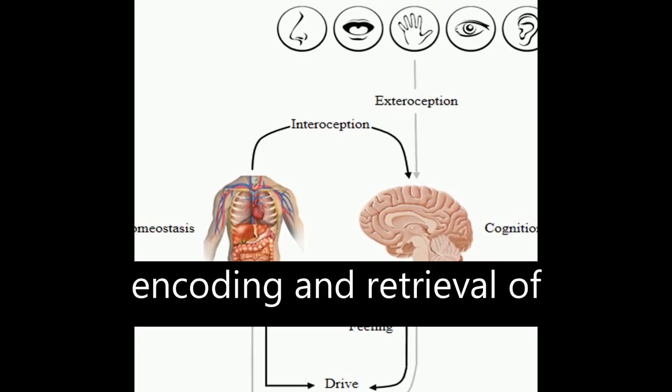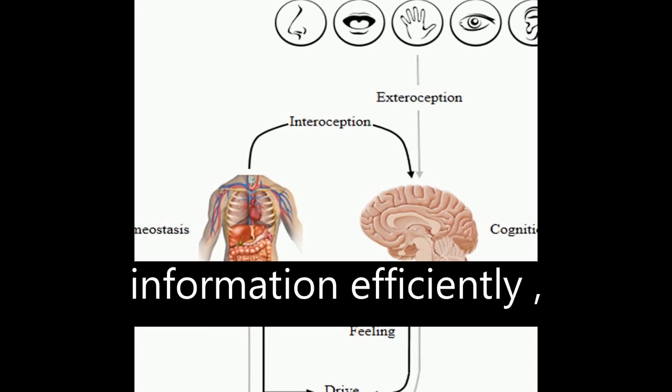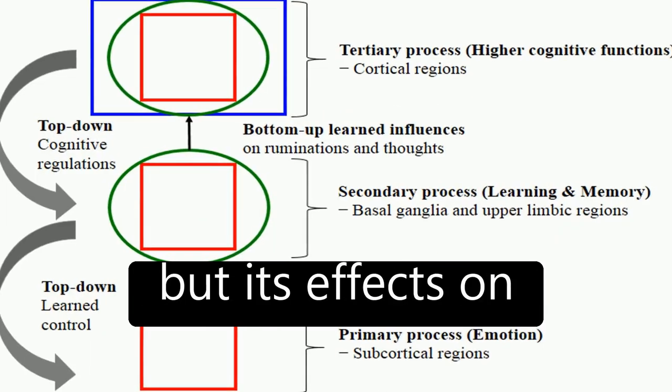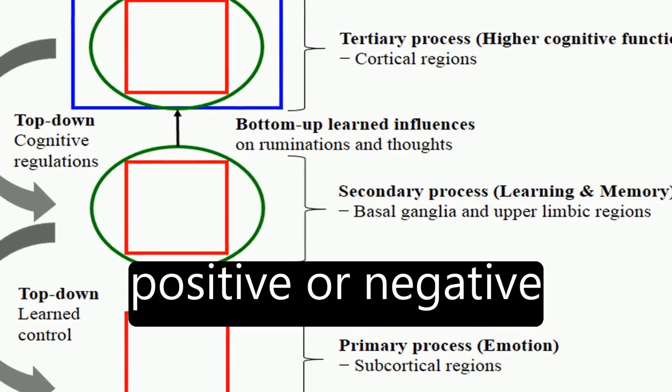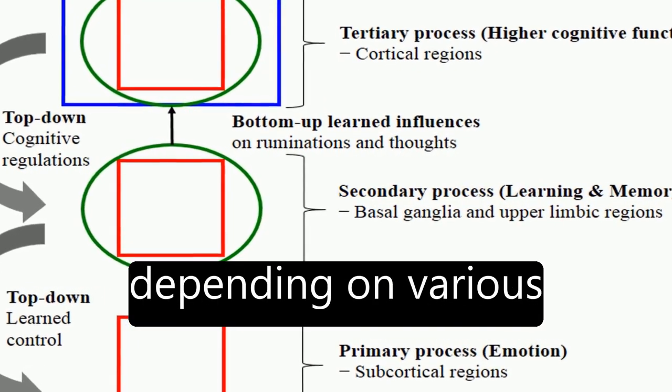Emotion facilitates encoding and retrieval of information efficiently, but its effects on learning and memory retention can be either positive or negative depending on various factors.